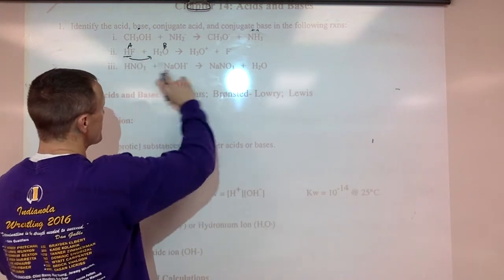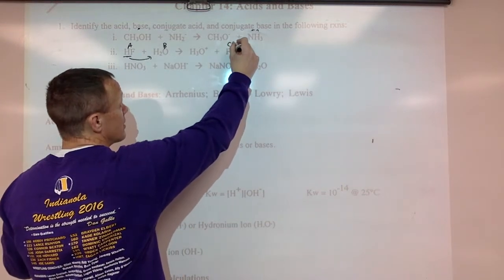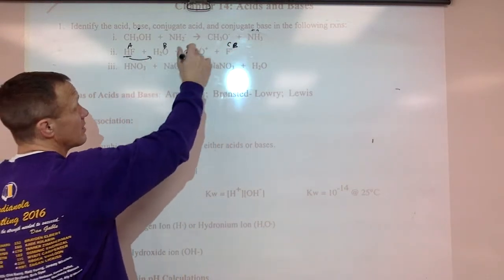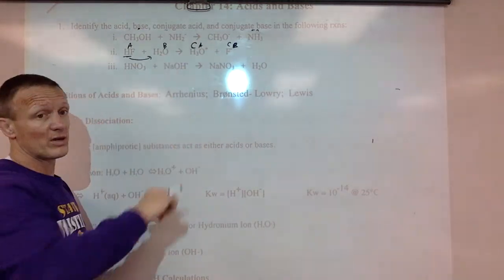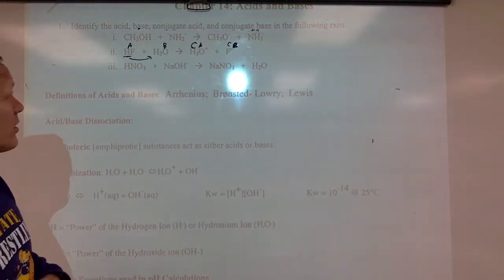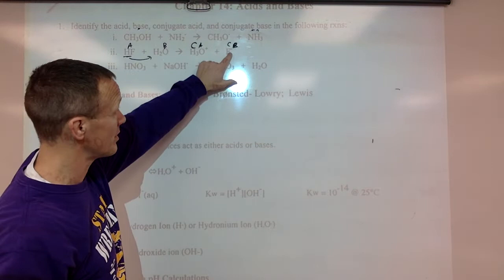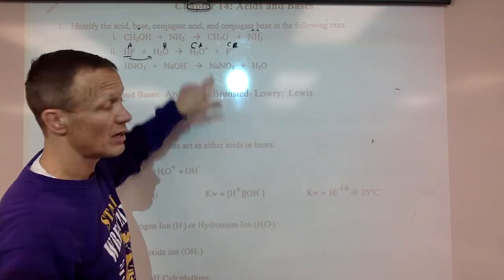This gave away that. So this is the conjugate base of this acid. This is the conjugate acid of this base. Once it gains hydrogen, now that's the conjugate acid from there. This is the base because it has the ability to gain hydrogen with the negative charge. It has the ability to get rid of hydrogen.